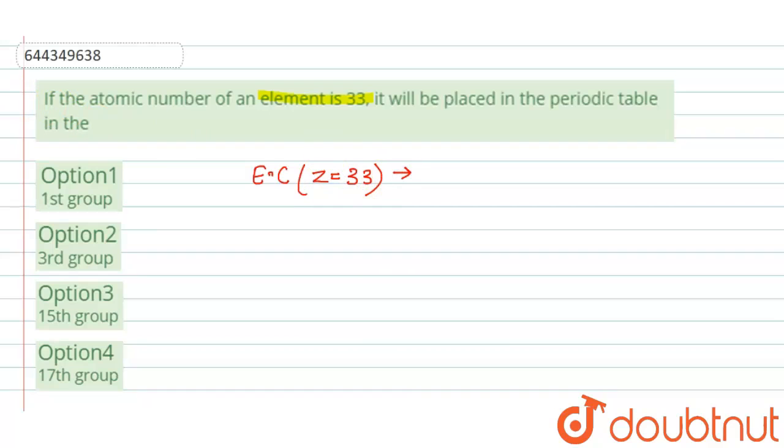So it will be: 1s² 2s² 2p⁶ 3s² 3p⁶ 4s² 3d¹⁰ 4p³.